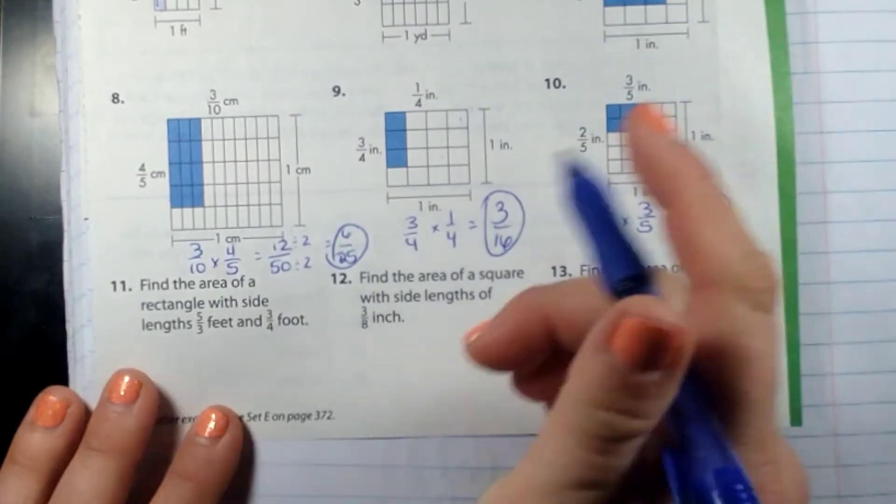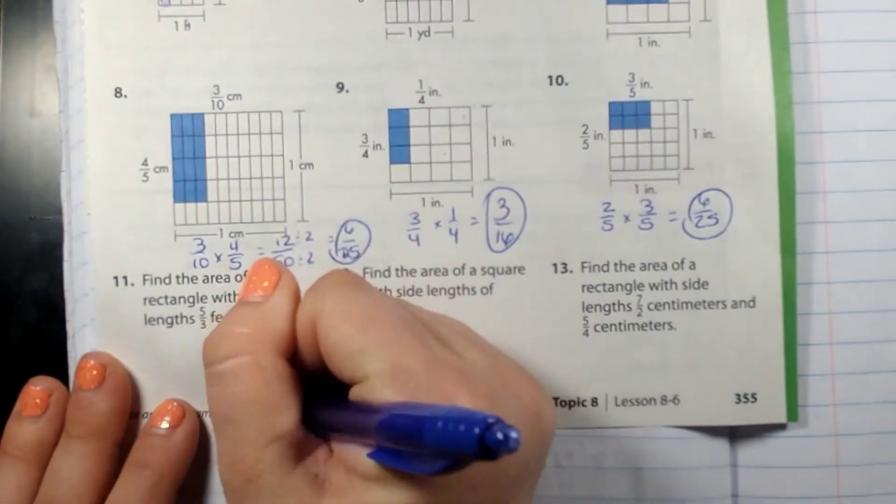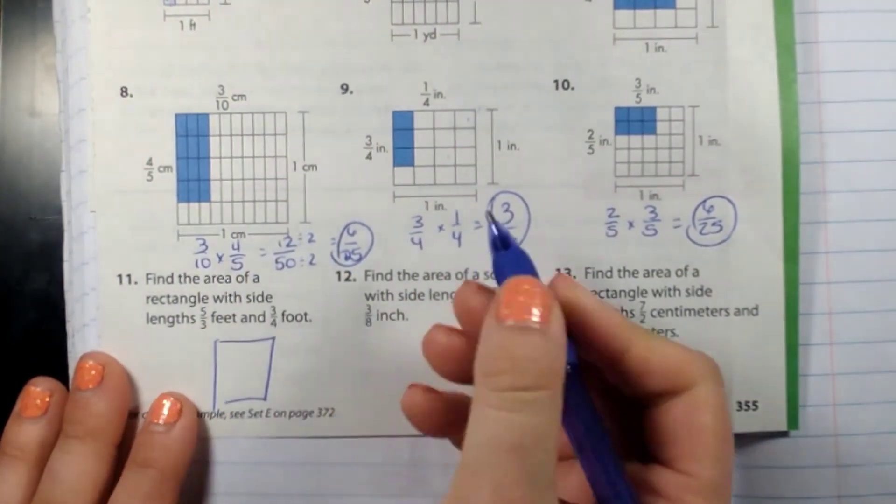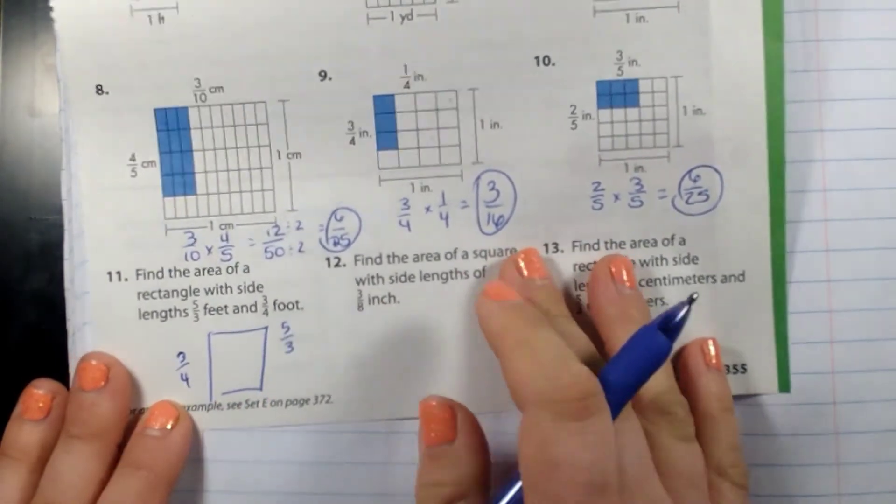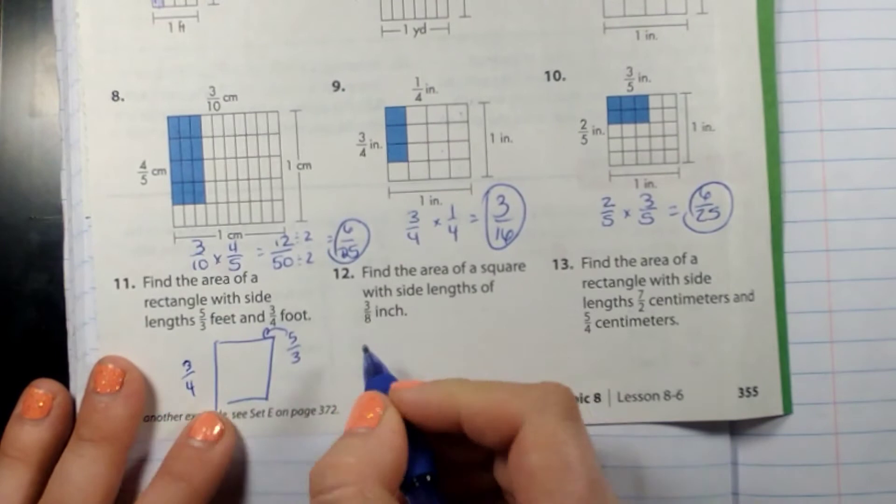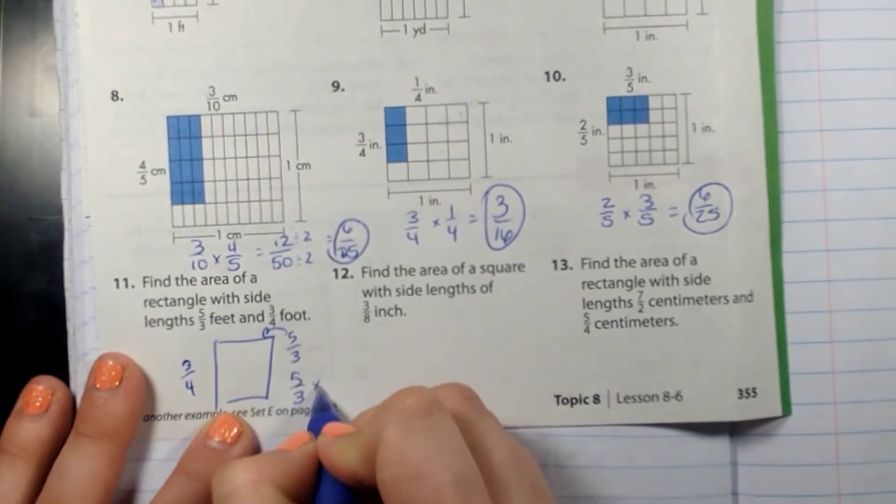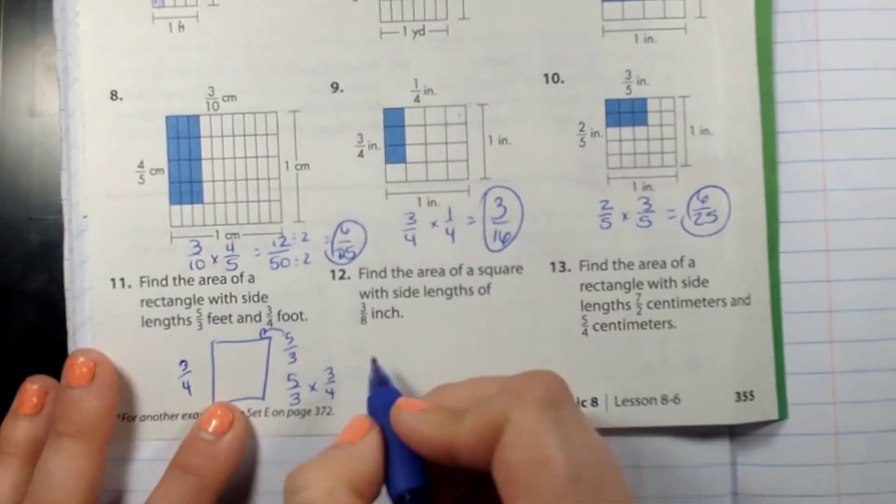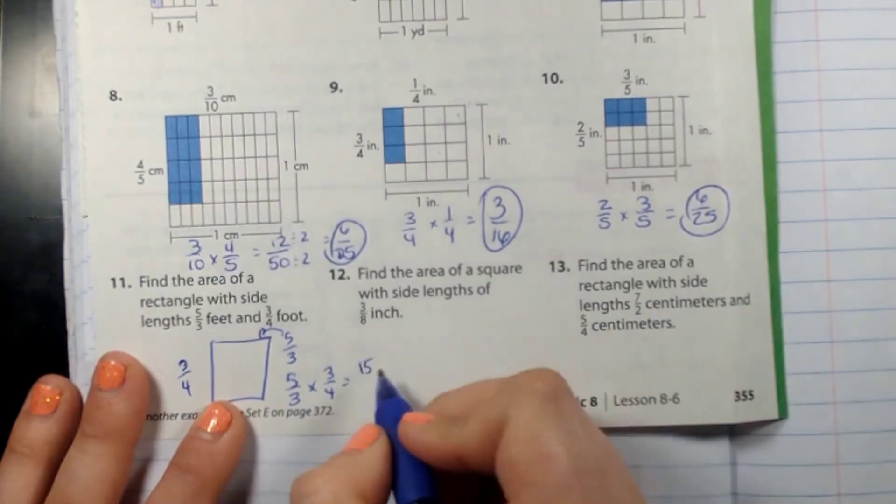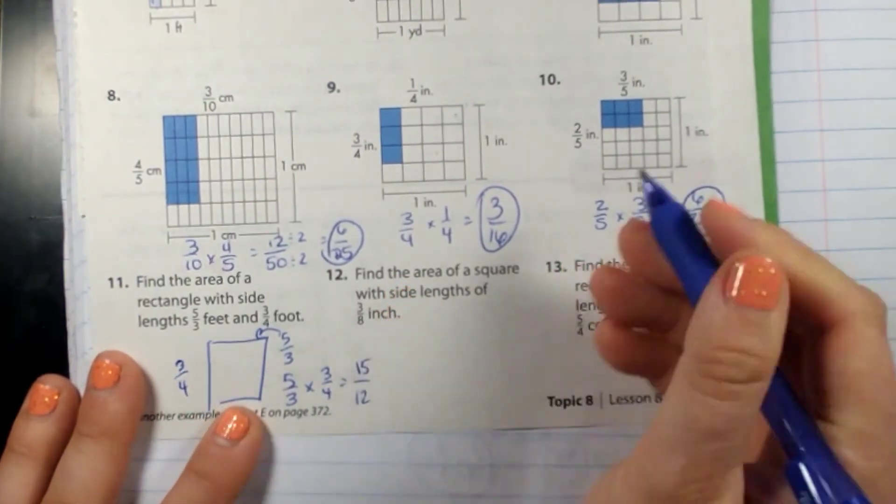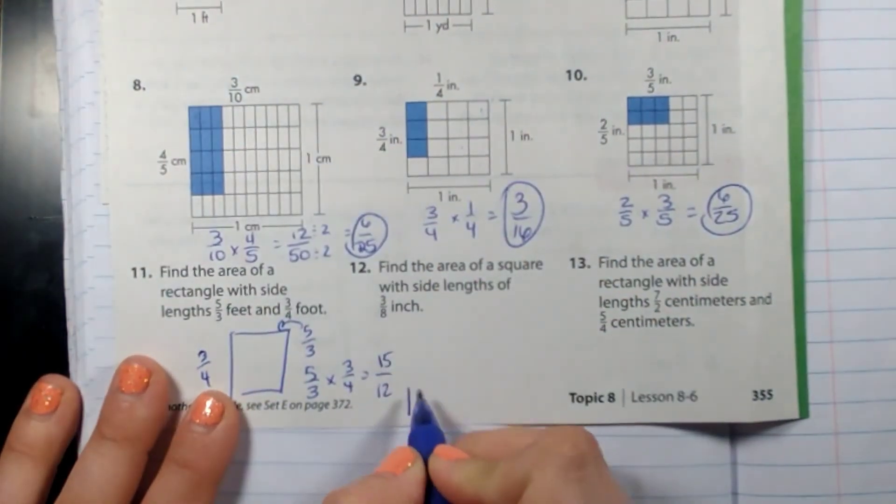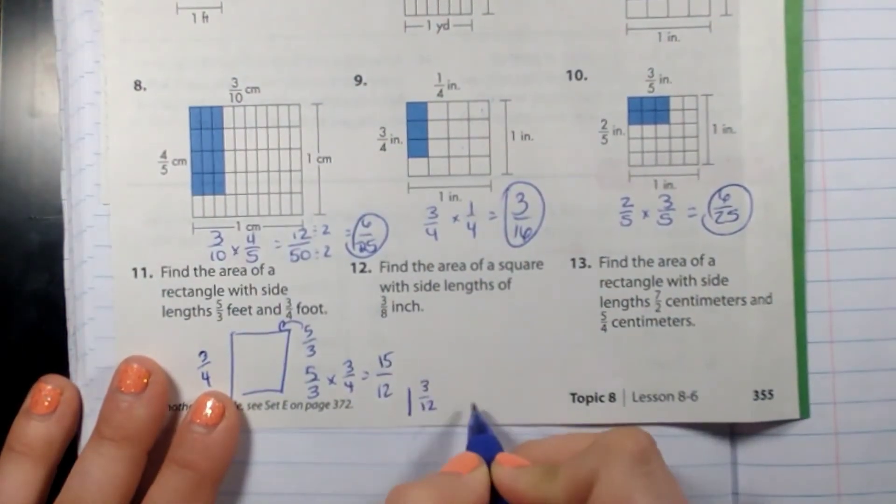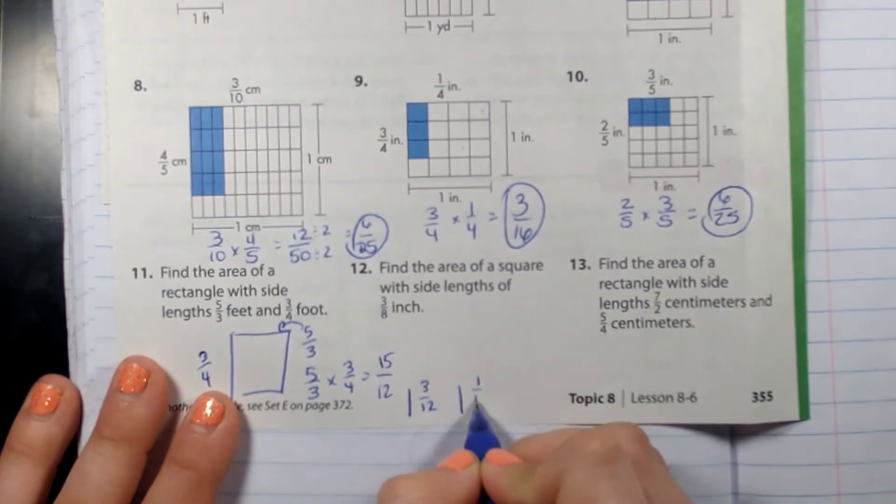Okay, let's look at the ones on the bottom here. Find the area of a rectangle with side lengths of three quarters of a foot and five thirds of a foot. This should be over here, so five thirds times three fourths. Yes, it's an improper fraction, but that doesn't matter because we're gonna have to change it anyway, which is why we learned that first. So this would be one and three twelfths, or one and one fourth.